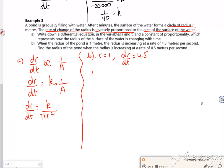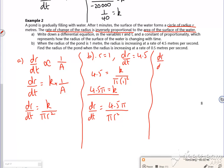So what have I got? I've got 4.5 is, no it's not, it's K over pi times 1 squared. So 4.5 pi is K. So DR by DT is 4.5 pi over pi R squared. So my DR by DT is 4.5 over R squared.